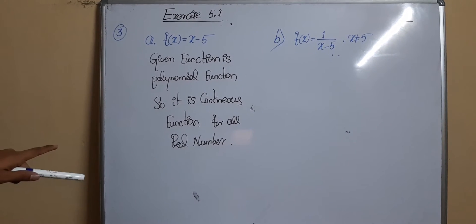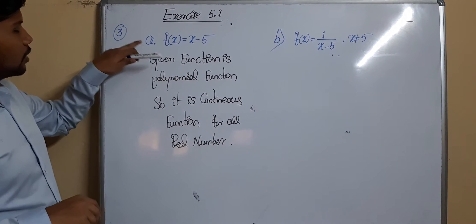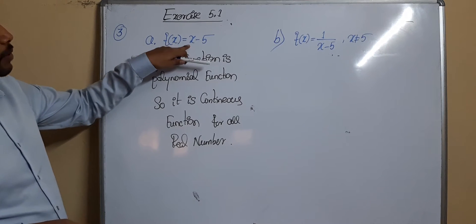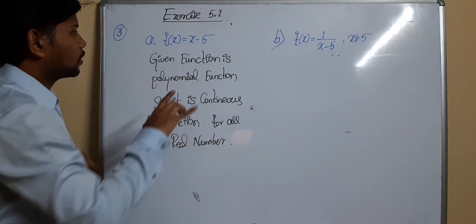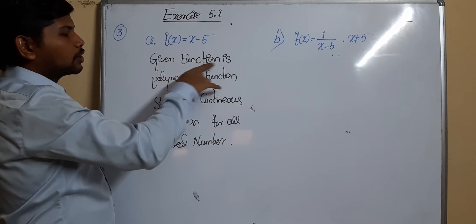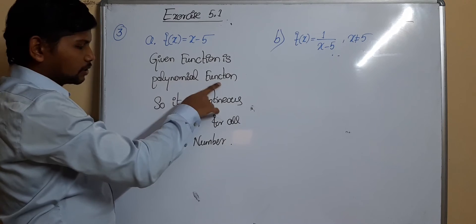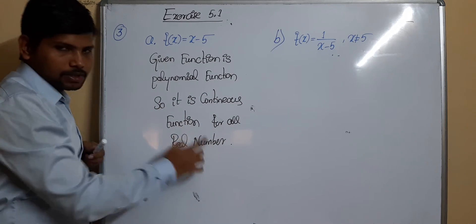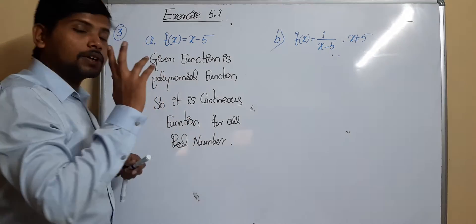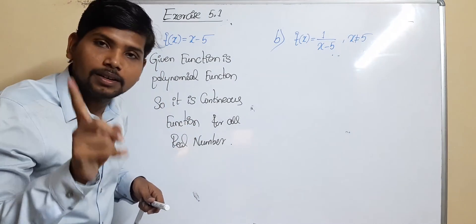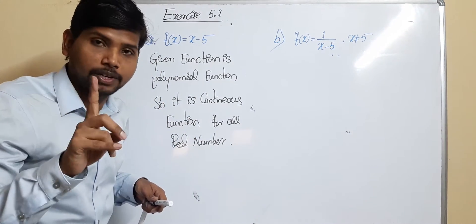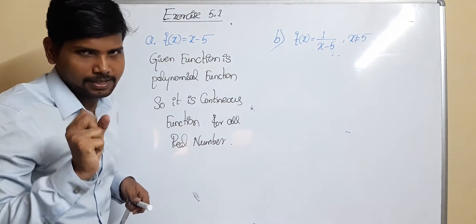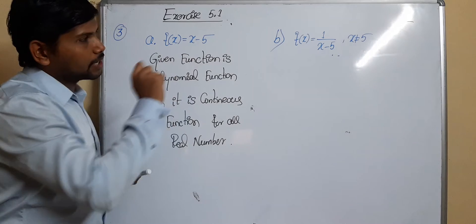For the next one, f(x) = x − 5. No specific point is given, so since the given function is a polynomial function, by the theorem every polynomial function is continuous, it is continuous for all real numbers.